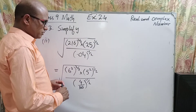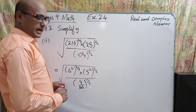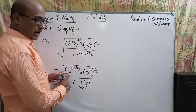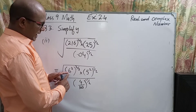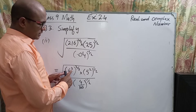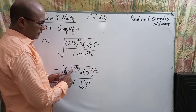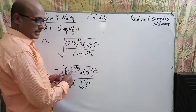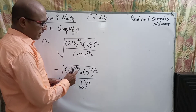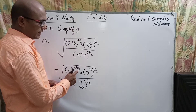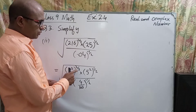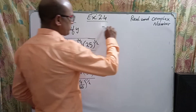Now watch carefully. The exponent of 6 is 3 — that 3 will come out of the bracket and will be multiplied by the whole exponent, which is 2/3.